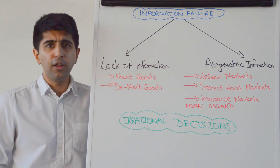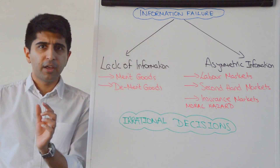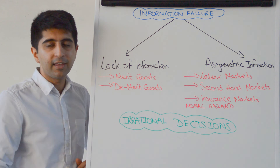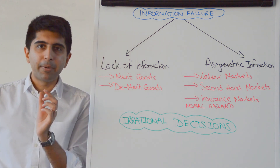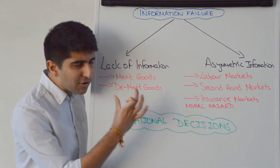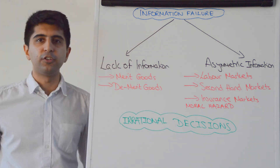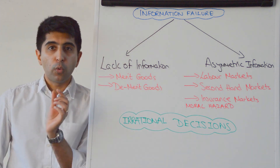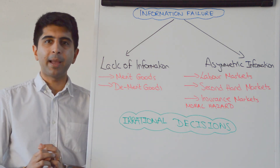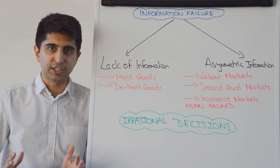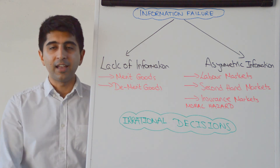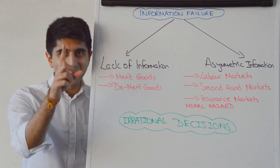So here's an example of how imperfect information can take place and how imperfect information can lead to irrational decisions being made where utility is not necessarily being maximised in each case. Thank you so much for watching — I will see you all in the next video.